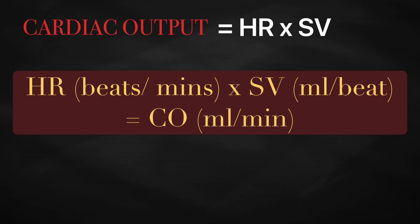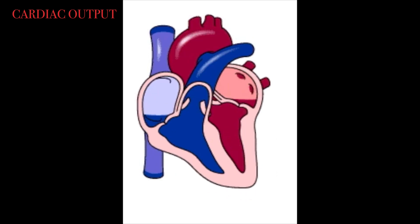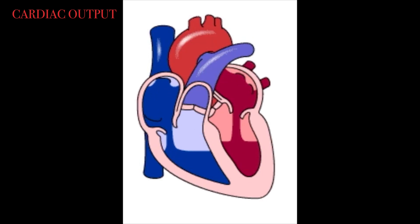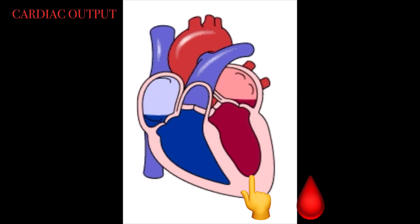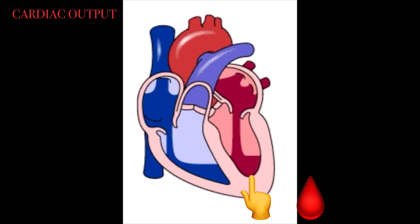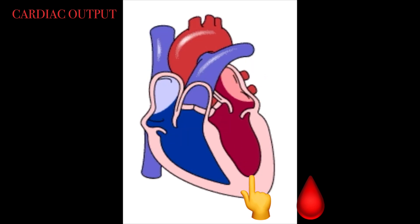The equation for cardiac output is calculated by multiplying the heart rate and the stroke volume. Bear in mind that cardiac output is the amount of blood pumped by the left ventricle, not the total amount pumped by both ventricles.